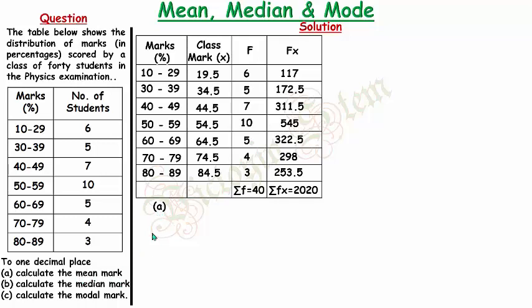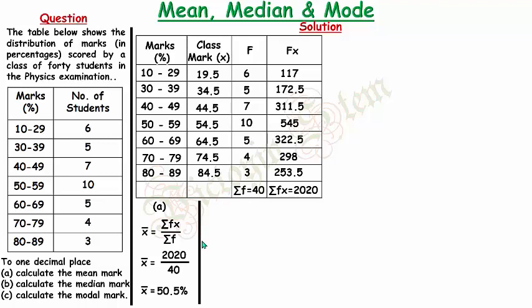Now for part (a), I need to find the mean mark. The formula for mean is x̄ = Σf(x) / Σf. The mean equals 2020 divided by 40, therefore the mean is equal to 50.5 percent.